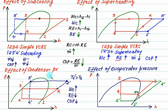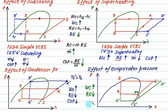Therefore, evaporator pressure should be as high as possible, and condenser pressure should be as low as possible. The effects of decreasing evaporator pressure are: compressor work increases, RE decreases (not desirable), mass flow rate increases, and COP decreases.